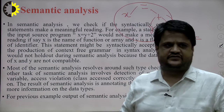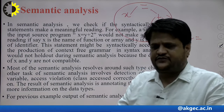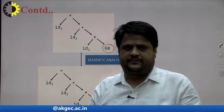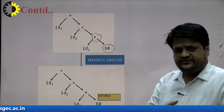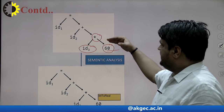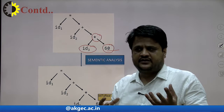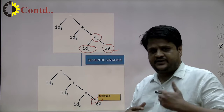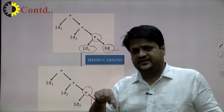For the previous example, the output of the semantic analysis phase is this one. Suppose ID1, ID2, and ID3 are of real/float type. Whenever you perform the multiplication, the value 60 is of integer type while ID3 is of real/float type, so there is a mismatch between the data types of the multiplication operator. The compiler will convert it into real type — integer to real conversion happens here. After that, 60 gets converted to real and then the operation is performed.